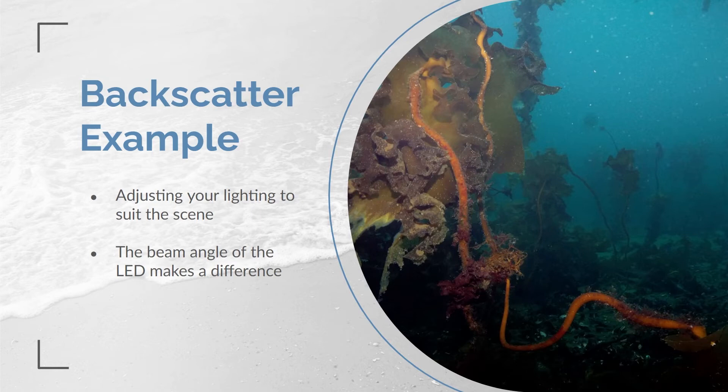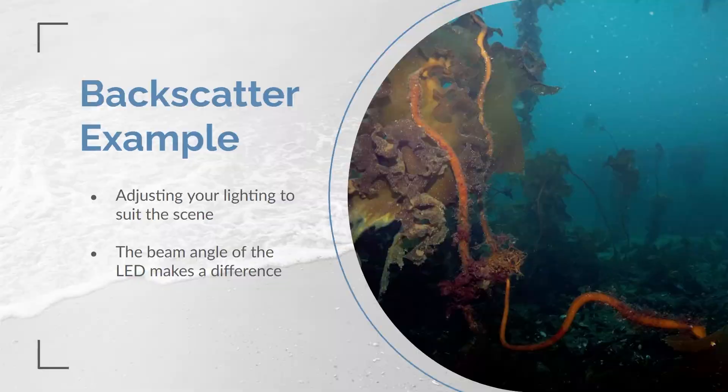A floodlight has a beam angle greater than 90 degrees, while a directional light has a beam angle less than 90 degrees. Floodlights spread light everywhere, even where you don't need it, but they allow for less planning. Directional lights, or beams, produce less backscatter and can be more intentionally positioned to illuminate the scene.